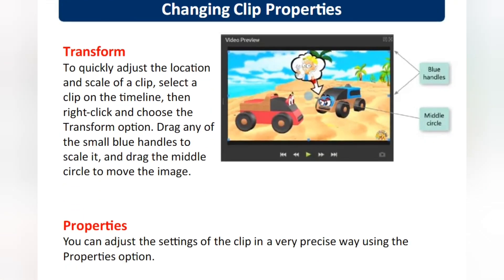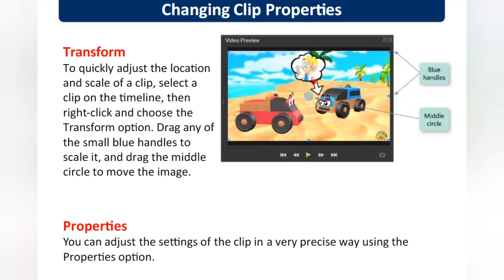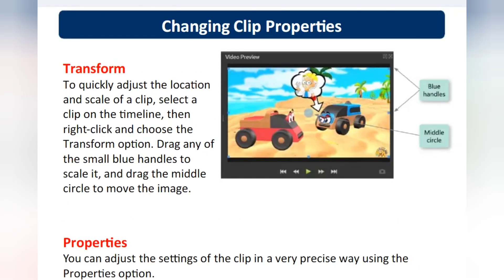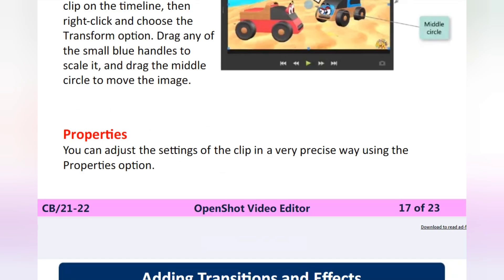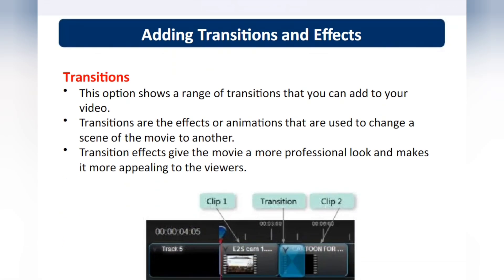Transform means changing the form of an object — you can change the color, action, or effect of a particular object using blue handles and a middle circle. Properties refers to the object's attributes such as size, height, width, and length — you can make changes to these properties as well.